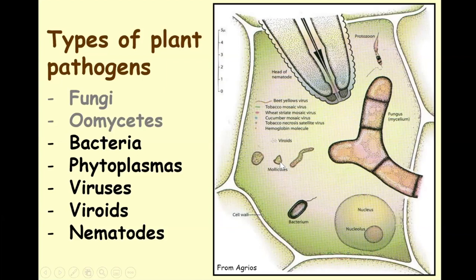Phytoplasmas are very similar to bacteria but don't have a rigid wall around them — they just have a membrane and take an irregular shape. So they can move very easily through the phloem sieve tubes, getting up and down the plant pretty easily. Because they don't have that wall, they can change shape and squeeze through narrow spaces. And they're all transmitted by leafhoppers — that's a very unique aspect of phytoplasmas.